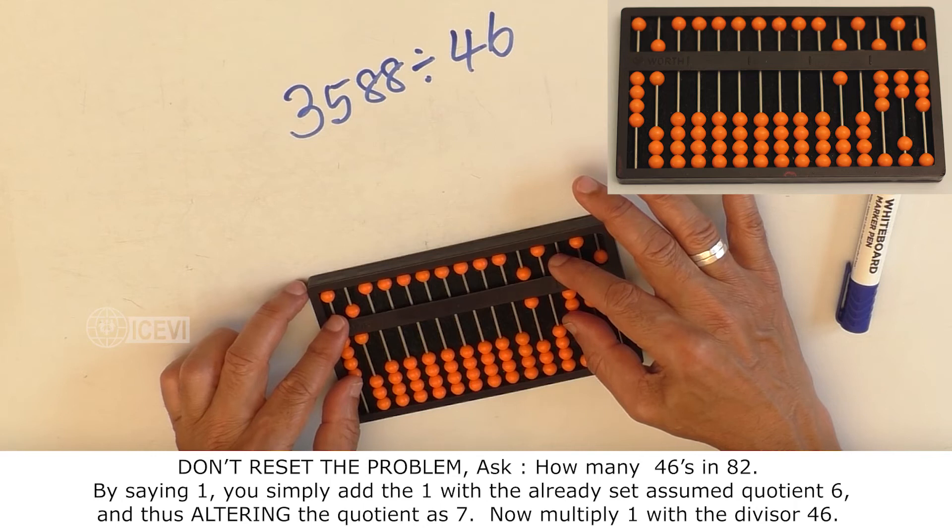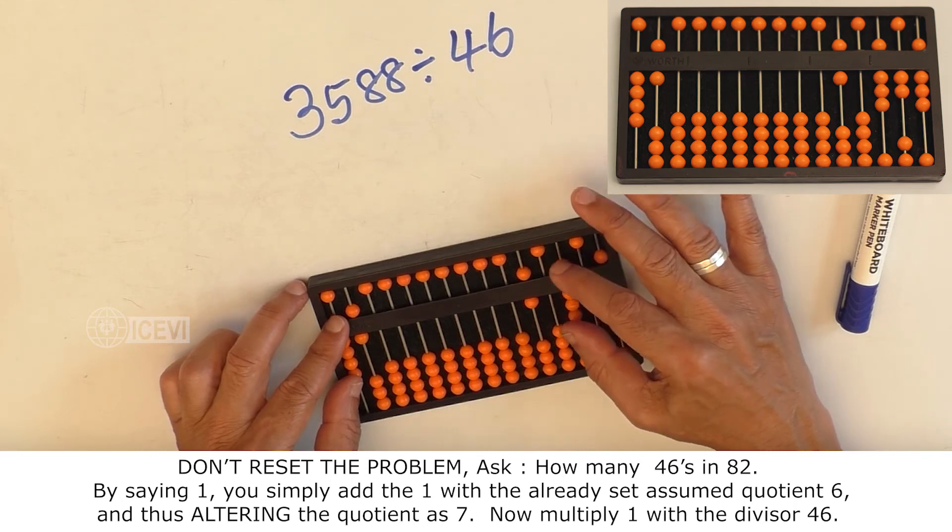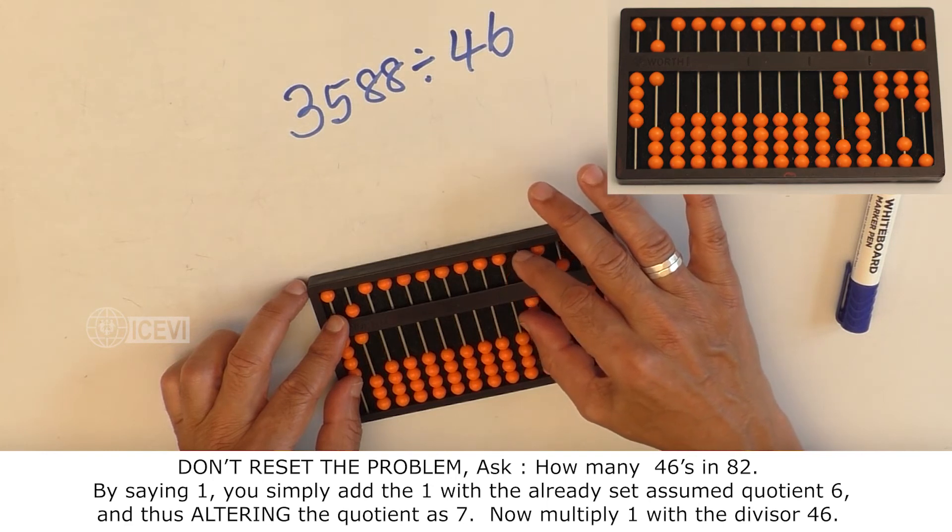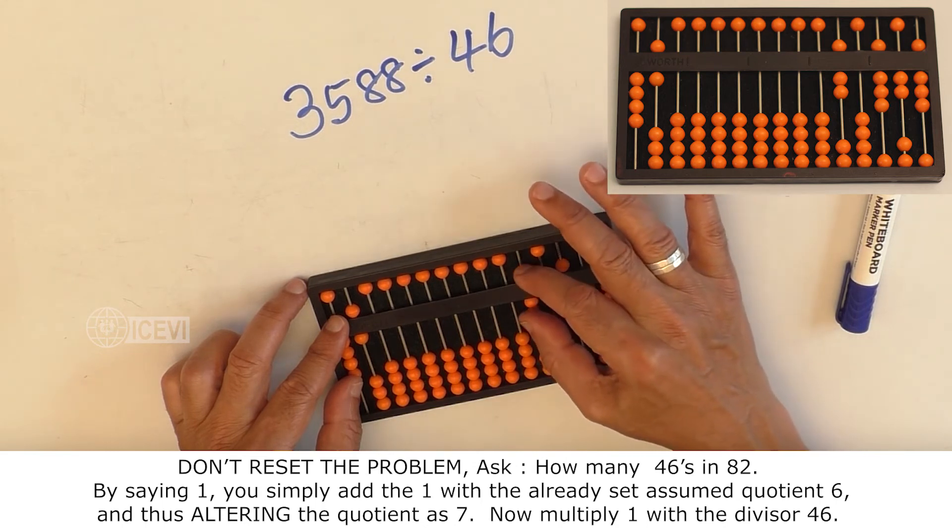Ask, how many 46s in 82? By saying 1, you simply add with the already set assumed quotient, and thus, altering the assumed quotient as 7.